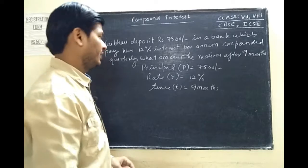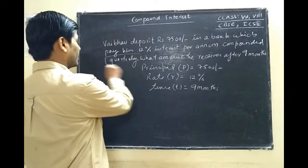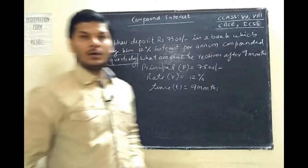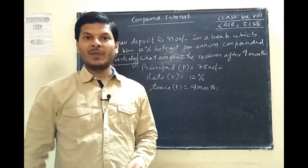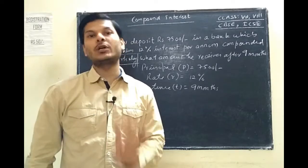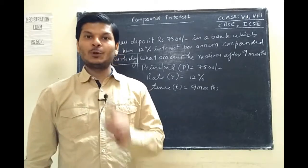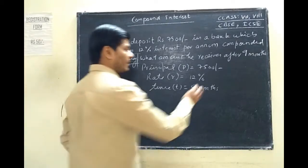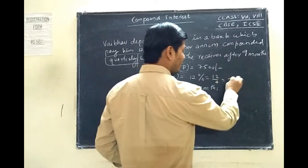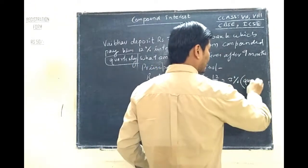What is the concept of quarterly compounding? Quarter means if we look at one year, there are 4 quarters in one year and each quarter is of 3 months. So quarterly means you divide the rate by 4, so the rate becomes 3% for quarterly calculation.